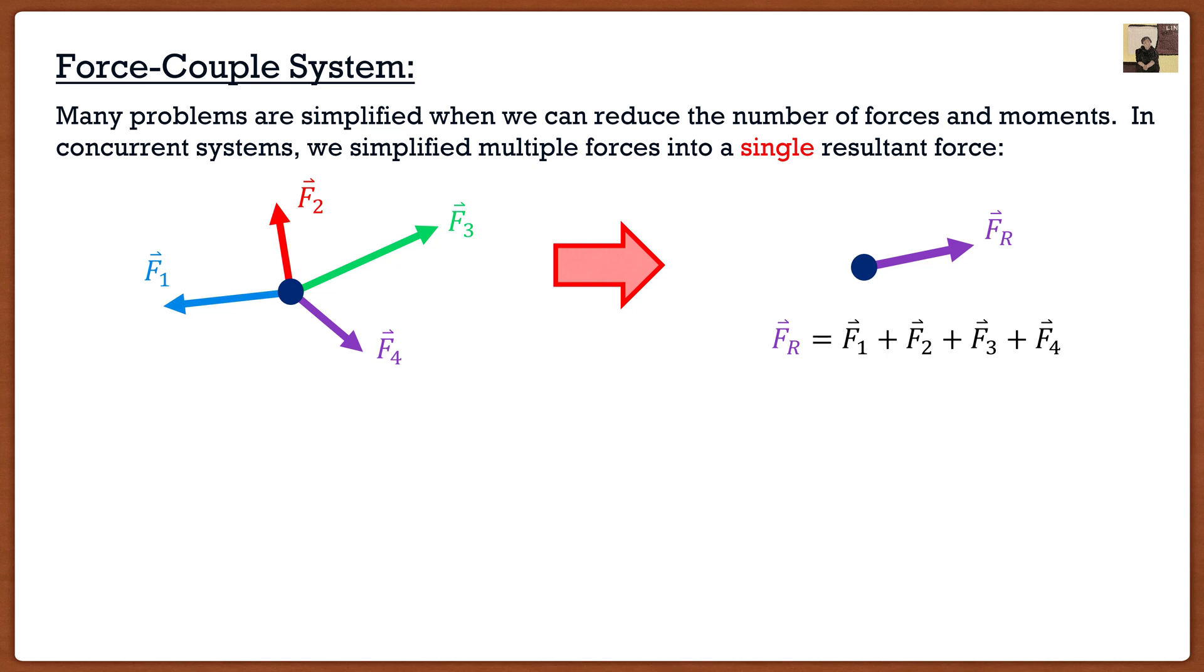In the past couple of videos, we've been talking about moments and what happens when forces do not act at the same point. So the question becomes, for non-concurrent systems where our forces are all acting at different locations, how do we find a resultant force and a resultant moment?